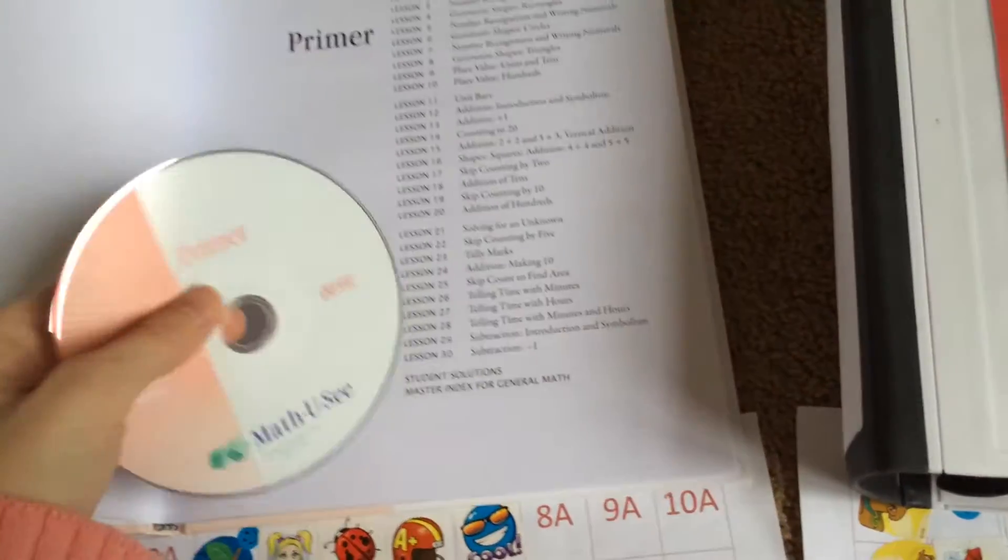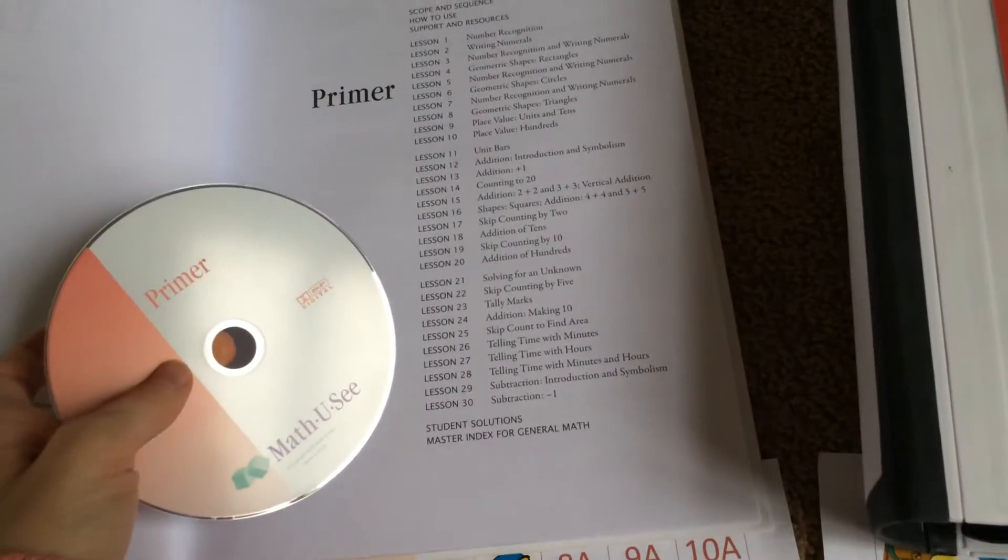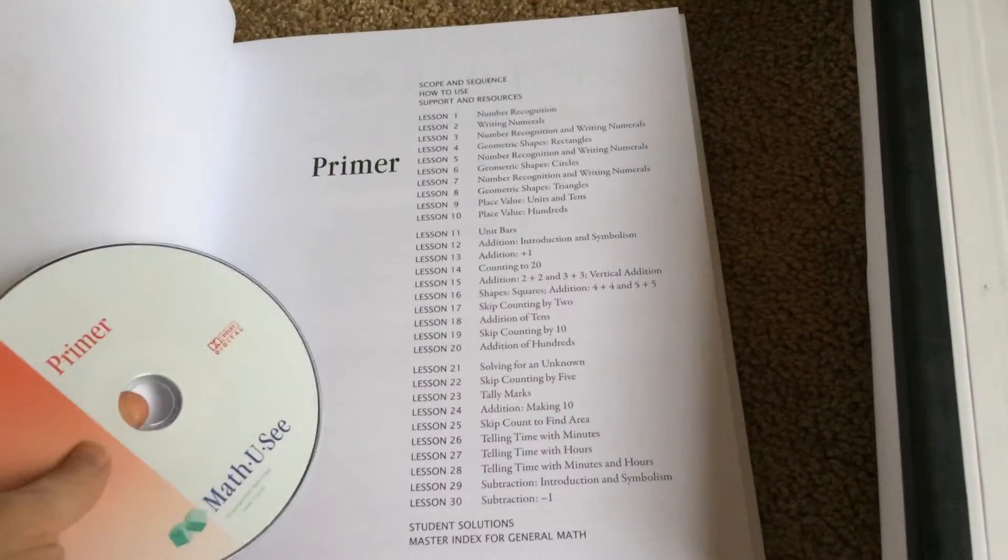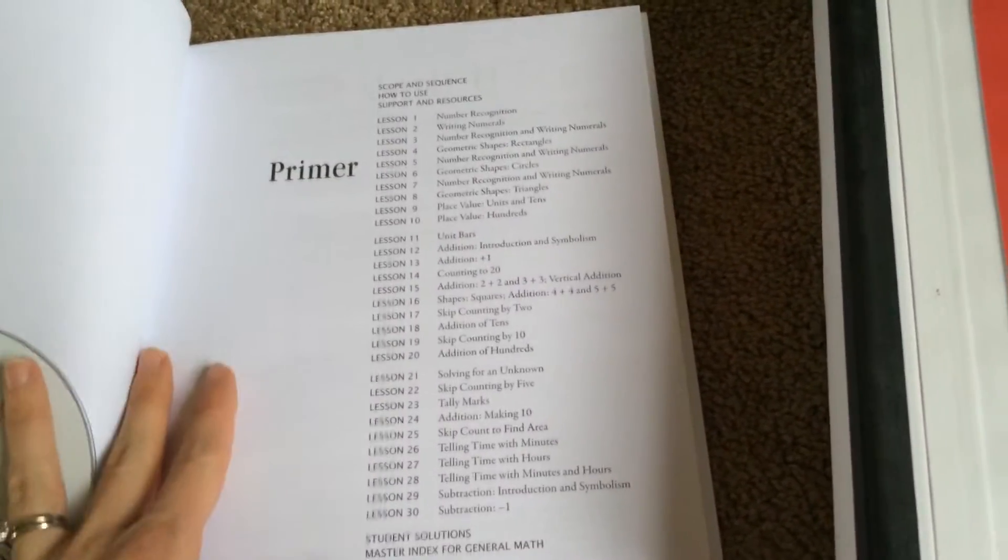I have the instruction manual and the DVD. These are considered the 2009 edition. It's the same according to the company as the current one, so I just went ahead and bought it off of another site rather than from the company.